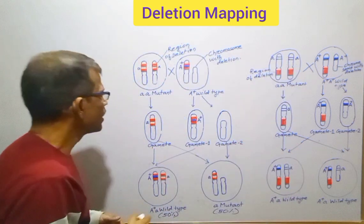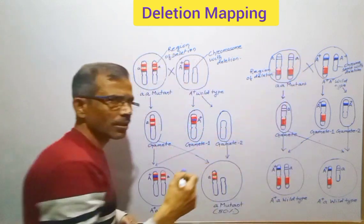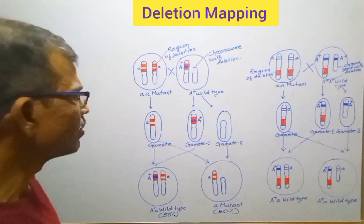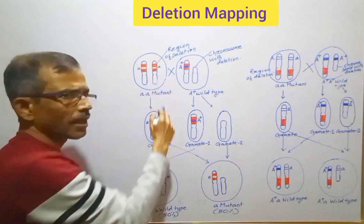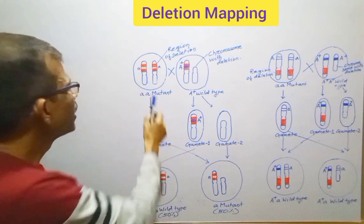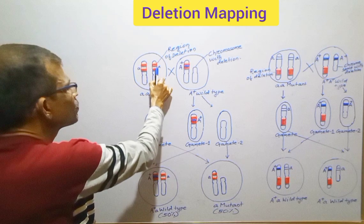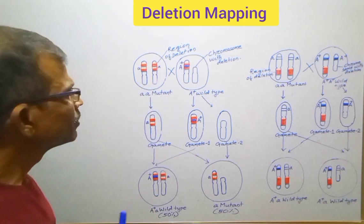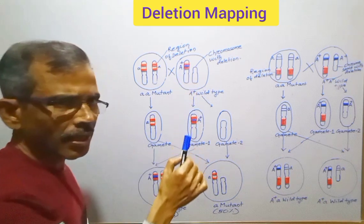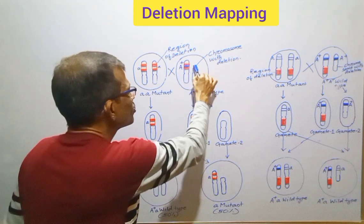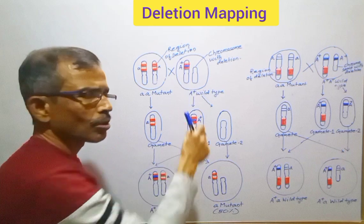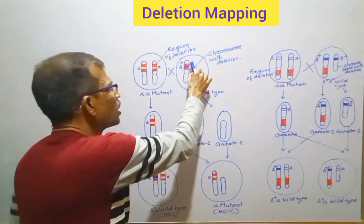In this technique, an individual homozygous for a recessive mutation is crossed with an individual heterozygous for the deletion. In the homozygous parent, both the chromosomes of the homologous pair have the mutated allele, and these alleles are present within this particular chromosomal band. In the homozygous individual, one chromosome is normal having a wild-type allele, but the remaining chromosome of the homologous pair has the deletion, because of which the particular chromosomal band which contains the gene has been removed.